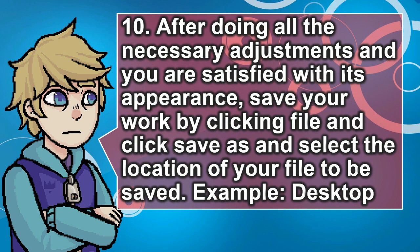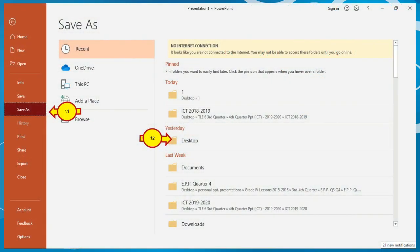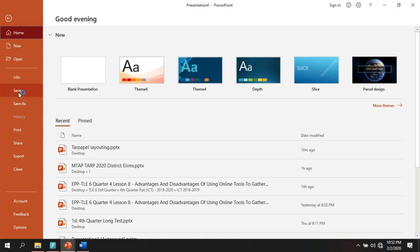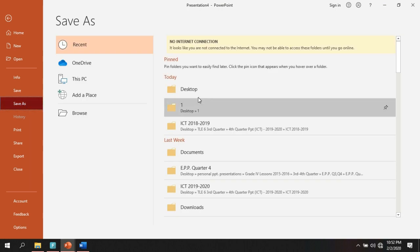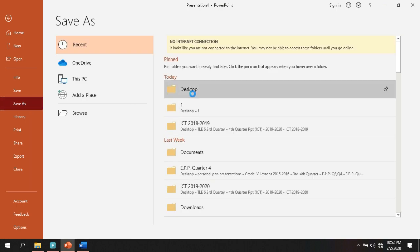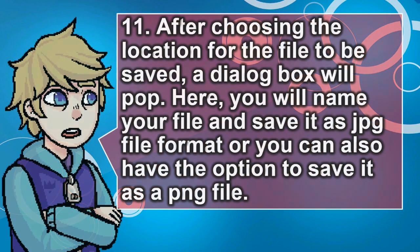After doing all the necessary adjustments and you are satisfied with its appearance, save your work by clicking File, then Save As, and select the location of your file — for example, the desktop. A dialog box will appear where you will name your file and save it as a JPG file format, or you also have the option to save it as a PNG file.